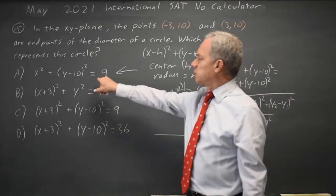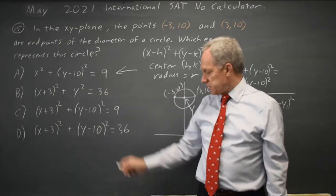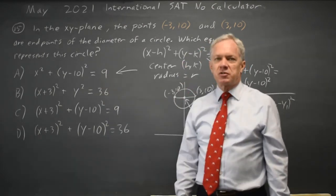And the only possible one based on the center has an r squared value of 9. So that would be the equation of the circle.